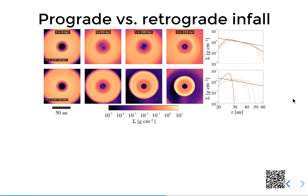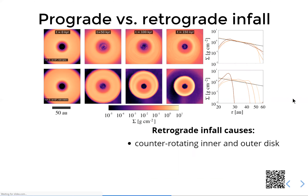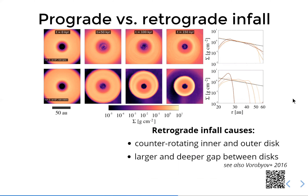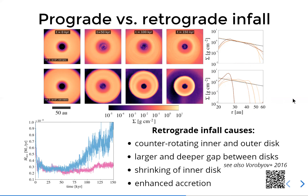In summary, we find in our study that retrograde infall causes counter-rotation of inner and outer disk. It can lead to larger and deeper gaps between the disks — which is possibly also interesting in the context of transition disks — it leads to the shrinking of an inner disk, and retrograde infall causes enhanced accretion onto the central star.